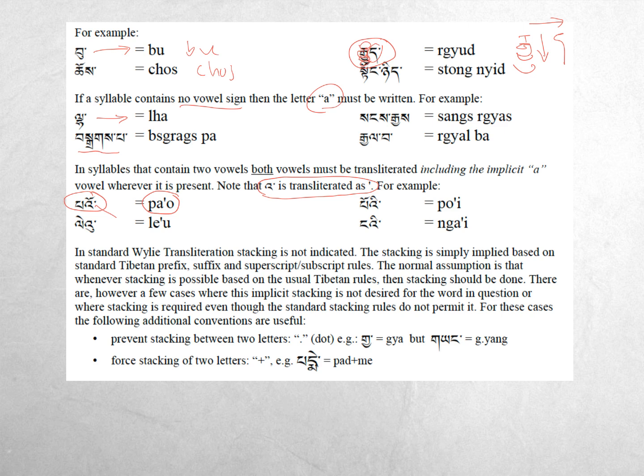That's about it - you just have to practice and get used to it. A couple things to notice: something like this, you have to write a period in Wylie to indicate that this is not a stacked word. If you were to write without the period, you would get this, where the ya is below the ga. But when you want to make sure that the ga shows up as a prefix, you use this period. And there are some other more complicated ways to represent Sanskrit words that we'll learn as we go along if we encounter those.